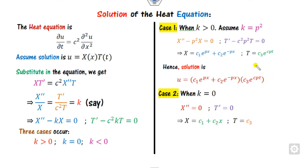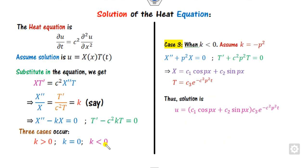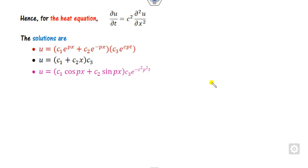When k equals zero, we get X double prime equals zero, which we solve to get a linear solution in x, and substituting gives the corresponding solution for u. For the third case, k less than zero, we set k equal to minus p squared. The solution for X involves sine and cosine, and for T involves an exponential part. Therefore, corresponding to this heat differential equation, there are three solutions.